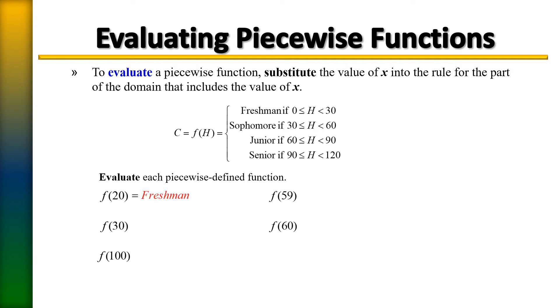f of 30? Yes, f of 30 would be a sophomore because sophomore starts with 30 and goes on to 59.